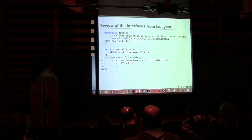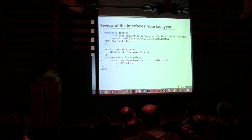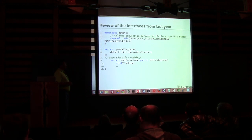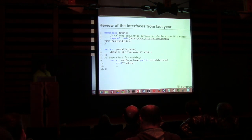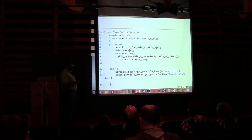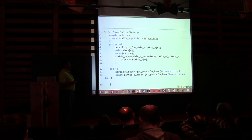Basically we have a function pointer. portable_base has a V-pointer to a table of function pointers. Then we derive from there, and for our purposes we add another pointer to some extra data. Based on the size of our V-table — how many functions were declared — we generate like an array of those. So data and then vtable_N. And then we have something where you can get the portable base.